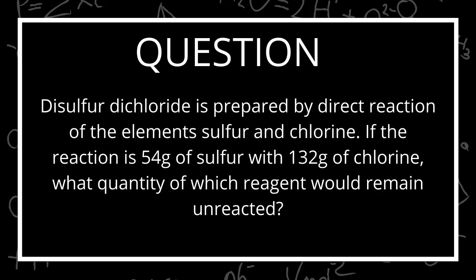The question reads that disulfur dichloride is prepared by direct reaction of the elements sulfur and chlorine. If the reaction is 54 grams of sulfur with 132 grams of chlorine, what quantity of which reagent would remain unreacted? So they're asking for the excess reagent and how much will be left over.